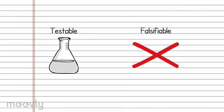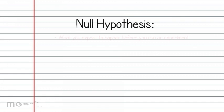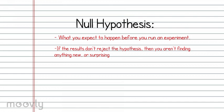It also has to be testable and falsifiable. A null hypothesis is what you expect to happen before you run an experiment. The idea is, if the results don't reject the null hypothesis, then you aren't finding anything new or surprising.